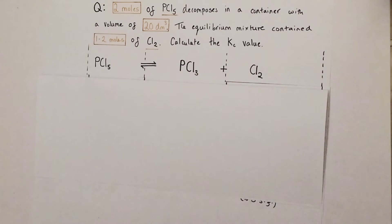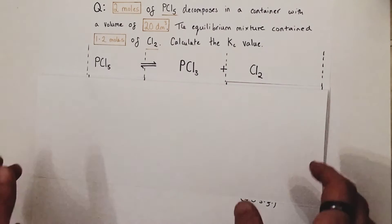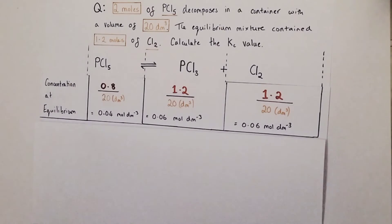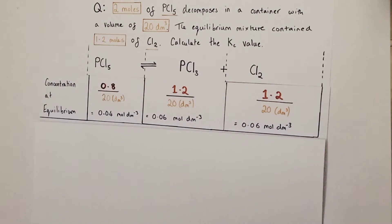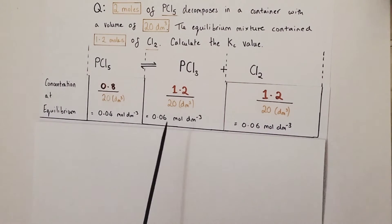The equilibrium constant utilises concentrations, so we have to convert our moles at equilibrium into concentrations. Concentration equals moles divided by volume. Dividing by the volume of 20 decimetres cubed, we convert our mole values into concentrations. Taking the equilibrium moles — 0.8, 1.2, 1.2 — and dividing by 20 litres, we get 0.04 mol/L of PCl5, and 0.06 mol/L of PCl3 and Cl2 respectively. These are the values we'll plug into our Kc expression.